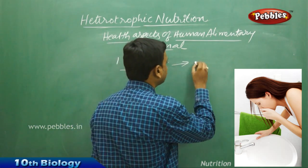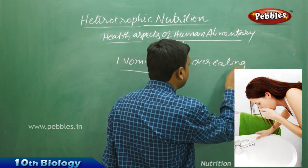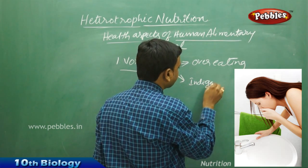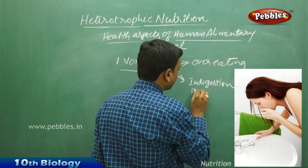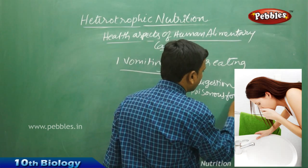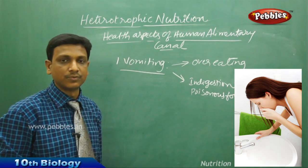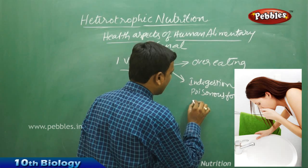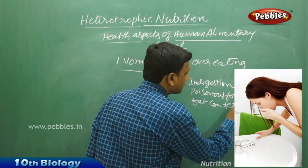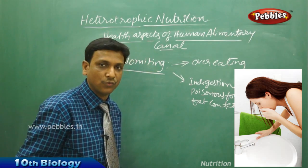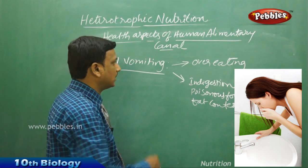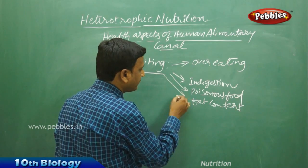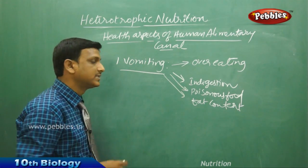Vomiting occurs in cases of overeating — eating stomach full — and also from eating inappropriate food, indigestion, or poisonous food. Poisonous food initiates the vomiting process to expel it. We can also observe vomiting when eating food high in fat content, as excess fat leads to a vomiting sensation. So the main reasons are overeating, indigestion, poisonous food, and food with high fat content.